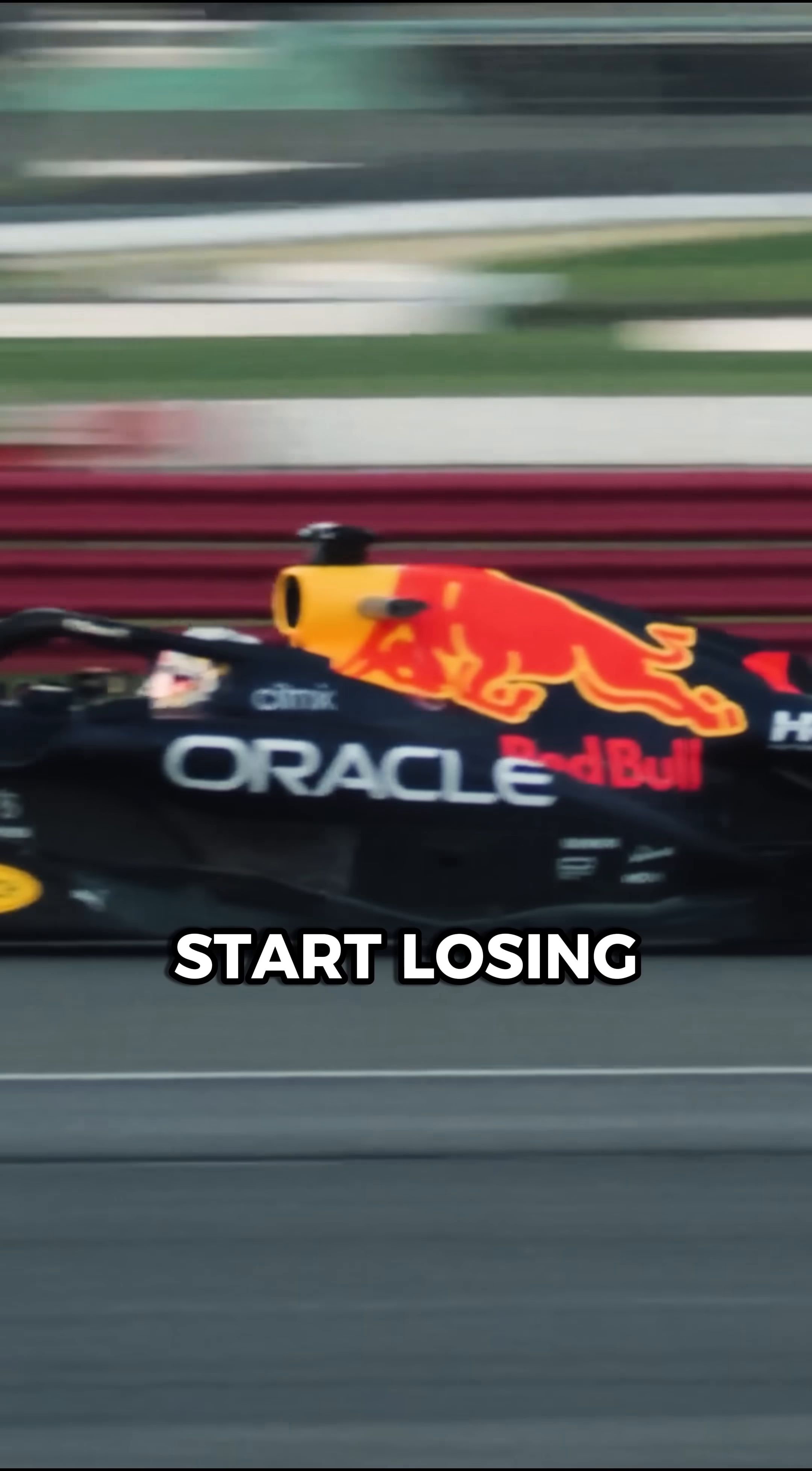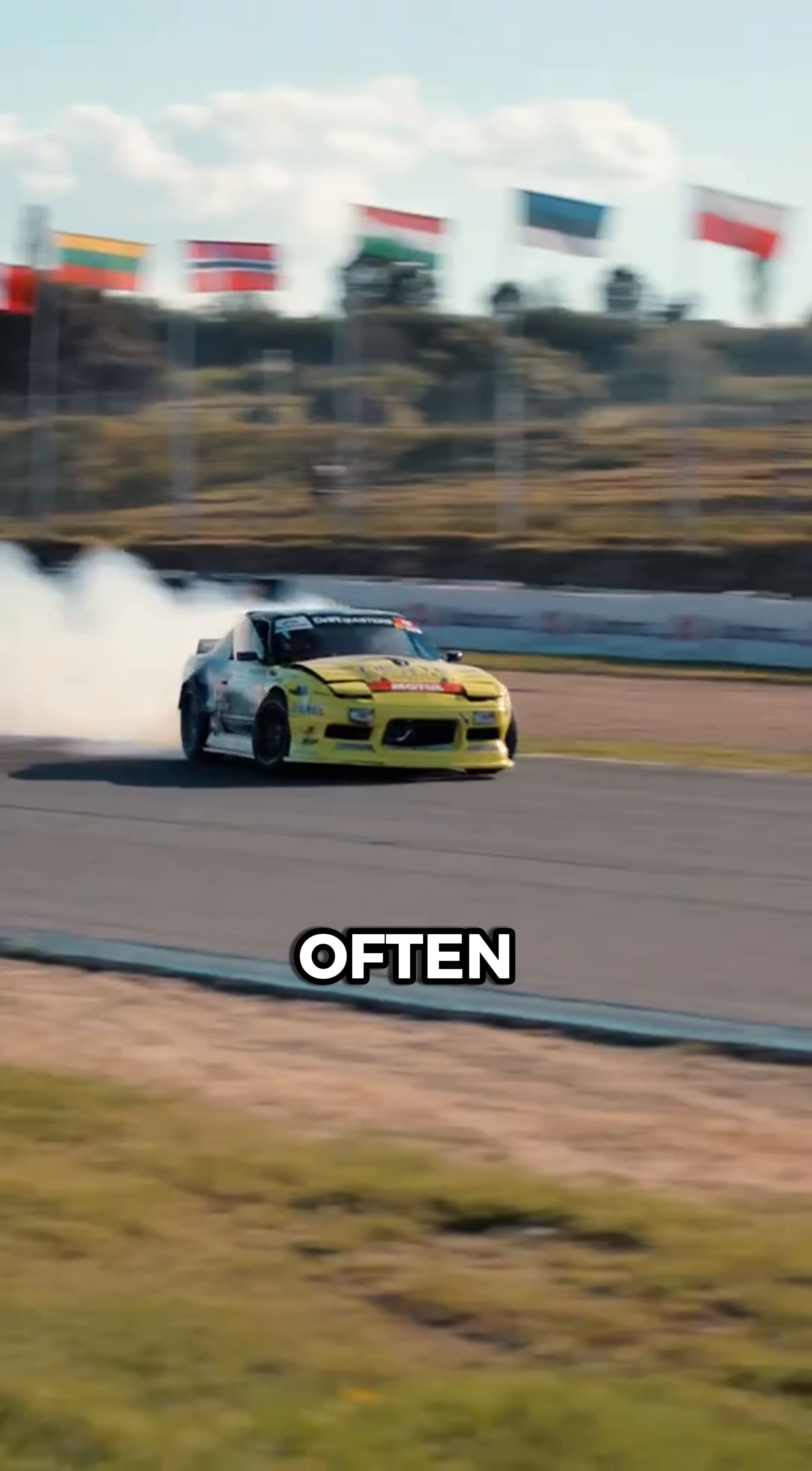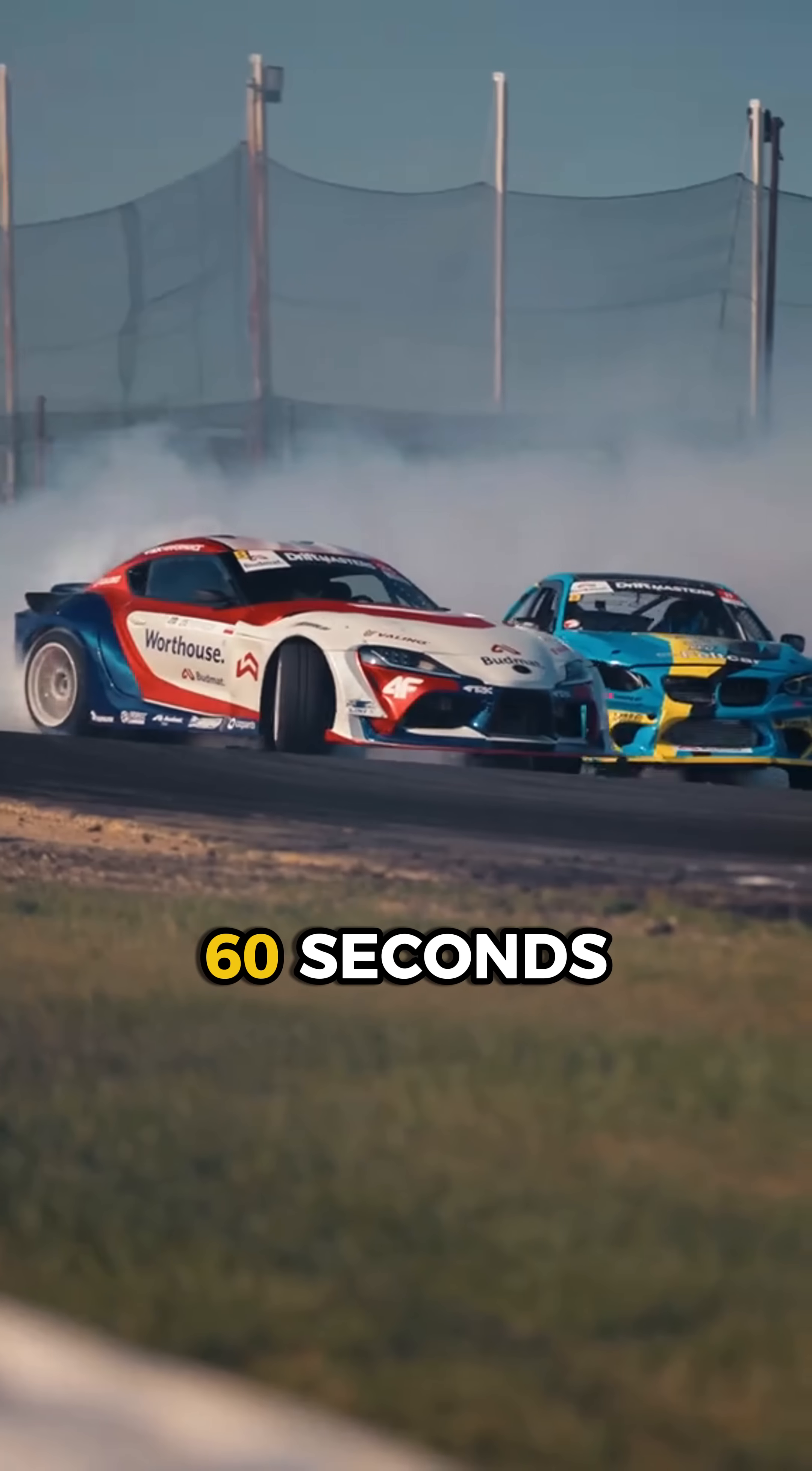In Formula One, tires start losing performance after just a dozen laps, even on perfect surfaces. In drifting, they often go from new to bald in under 60 seconds.